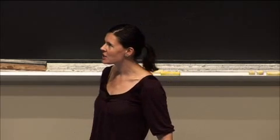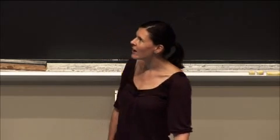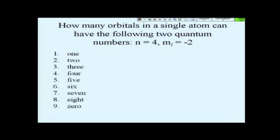Let's go to a second clicker question. How many possible orbitals can you have in a single atom that have the following two quantum numbers: n equals 4 and m sub l equaling negative 2? How many different orbitals can you have that have those two quantum numbers? This should look familiar to some of the problems on the problem set.